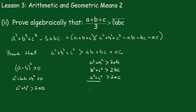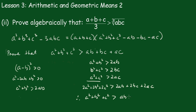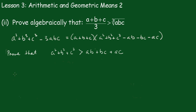Adding all these up, because they're all positive, we get 2a² + 2b² + 2c² > 2ab + 2bc + 2ac. Dividing throughout by 2 we get a² + b² + c² > ab + bc + ac. Now the next thing to prove is that a³ + b³ + c³ > 3abc.